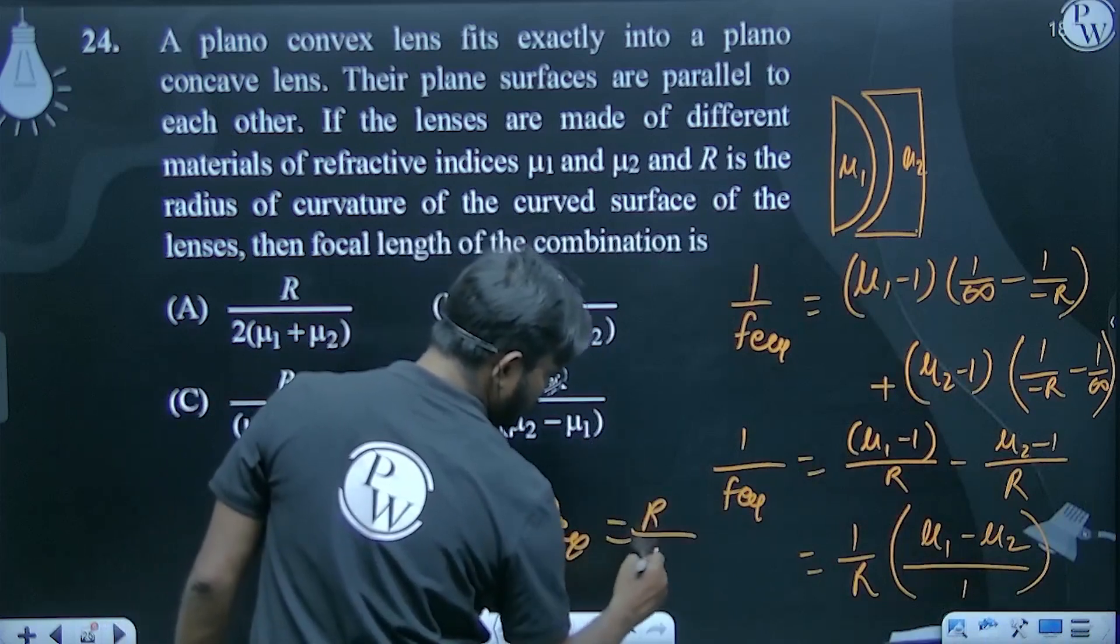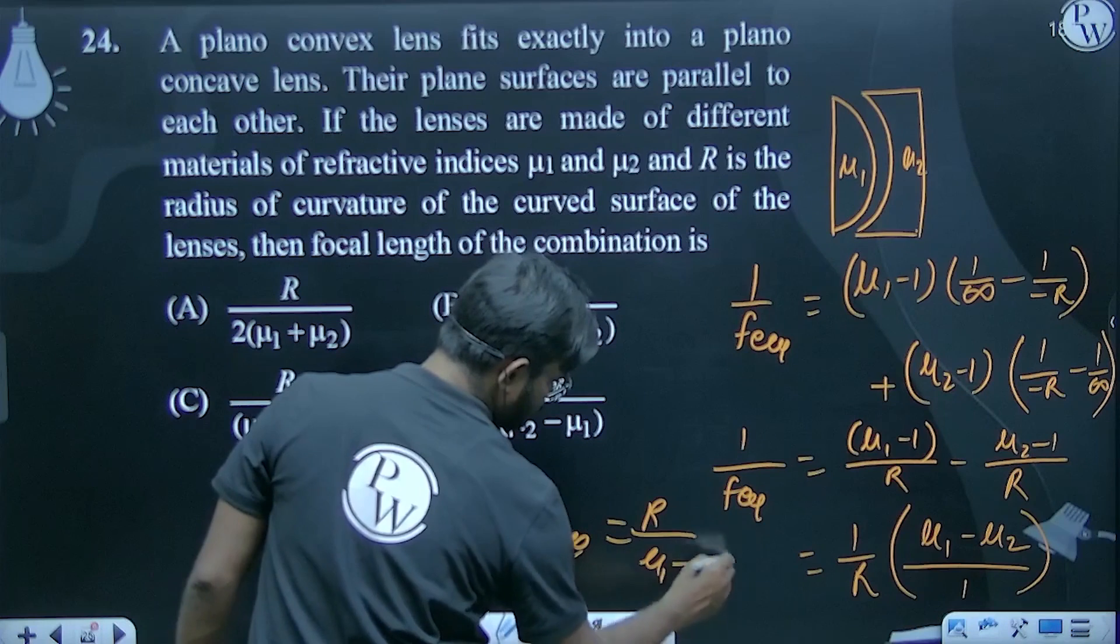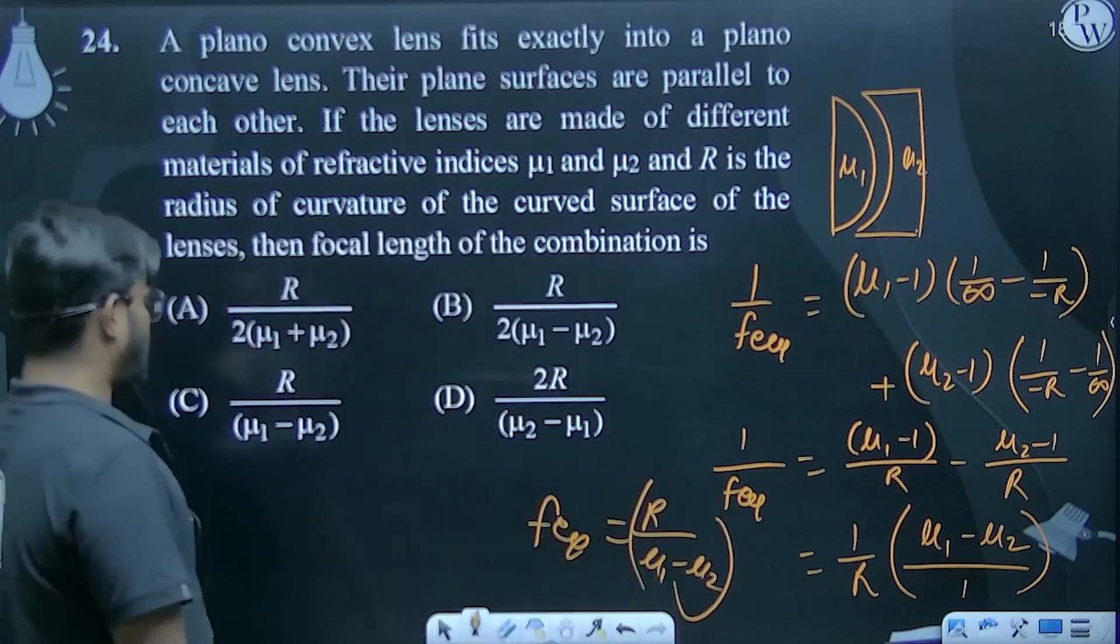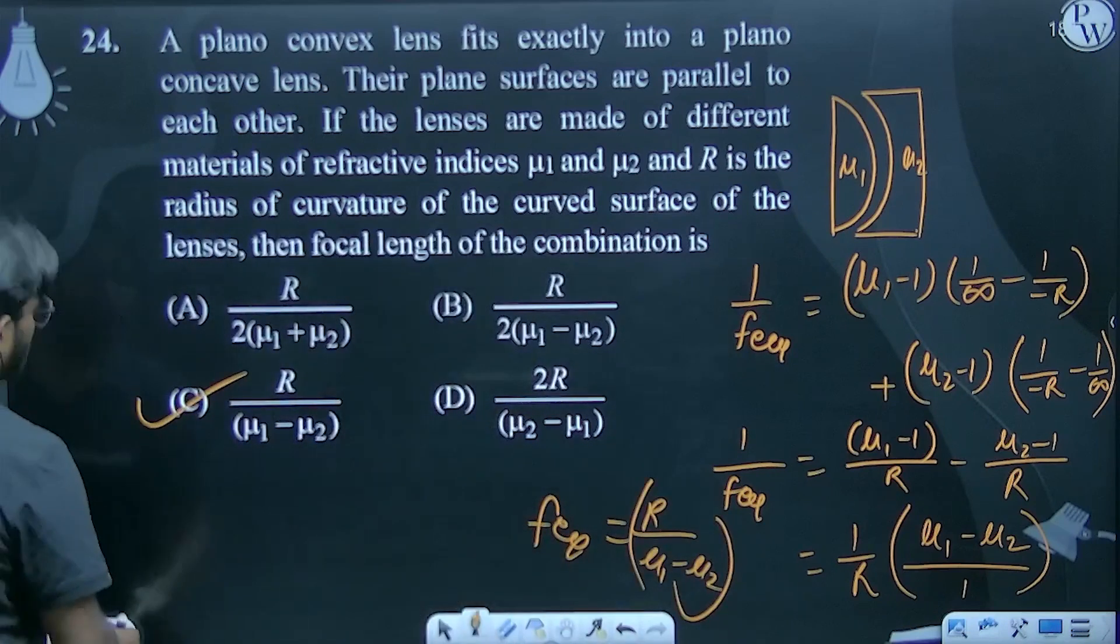We get R upon mu 1 minus mu 2. R upon mu 1 minus mu 2. Option C is the correct answer to this question.